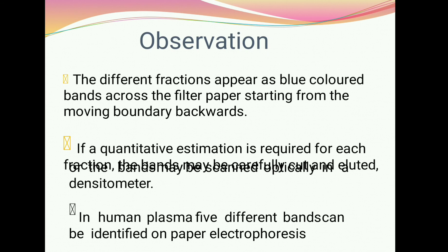Observations: The different fractions appear as blue colored bands across the filter paper starting from the moving boundary. We can see different bands from the starting point to the end point. For quantitative estimation of the fractions, we can cut out the band from the filter paper or scan it optically using a densitometer.